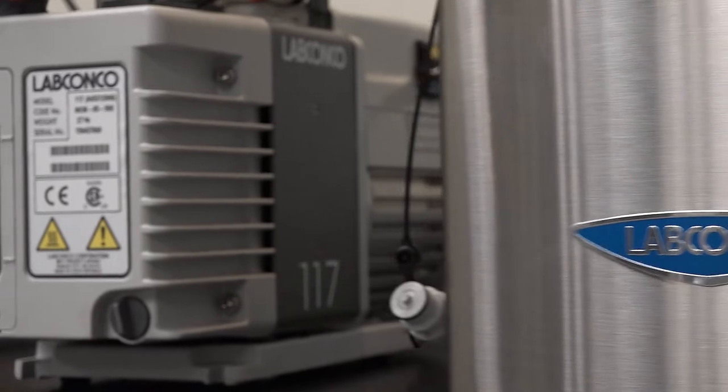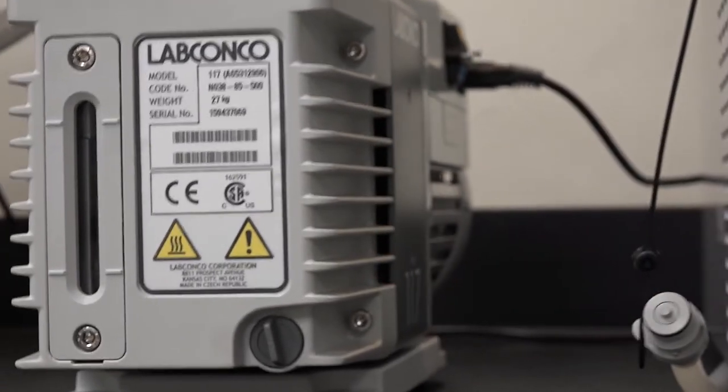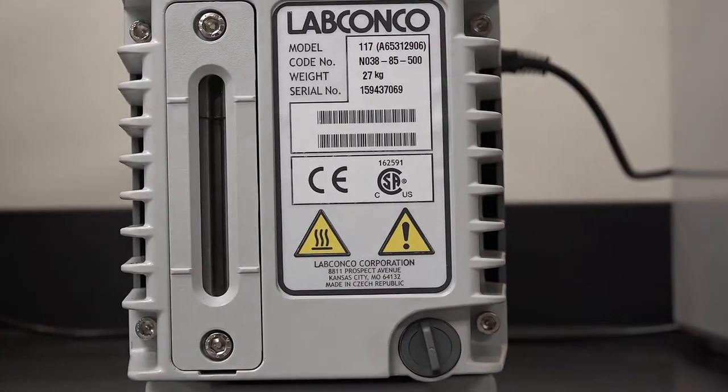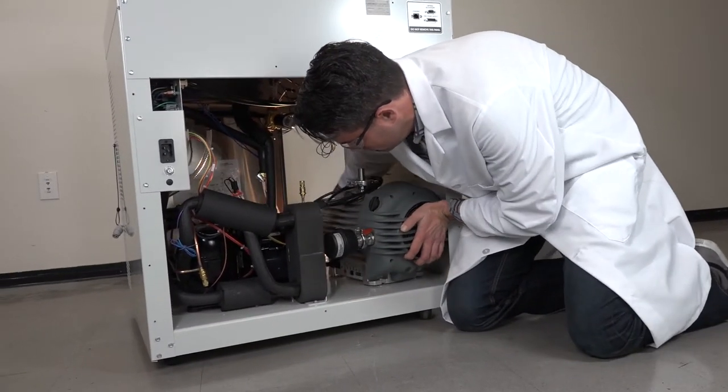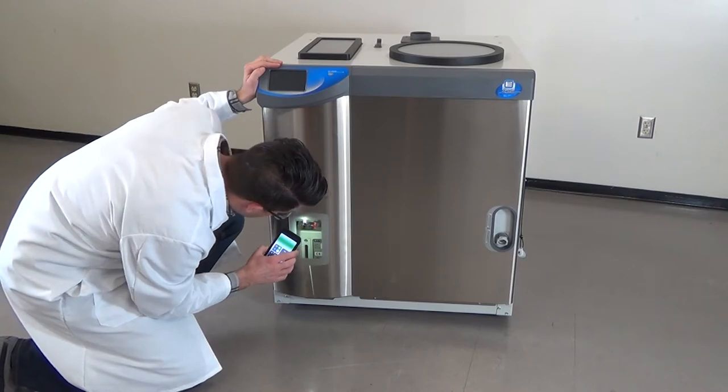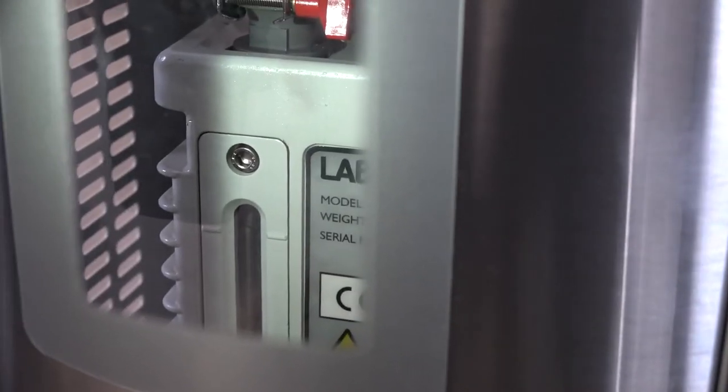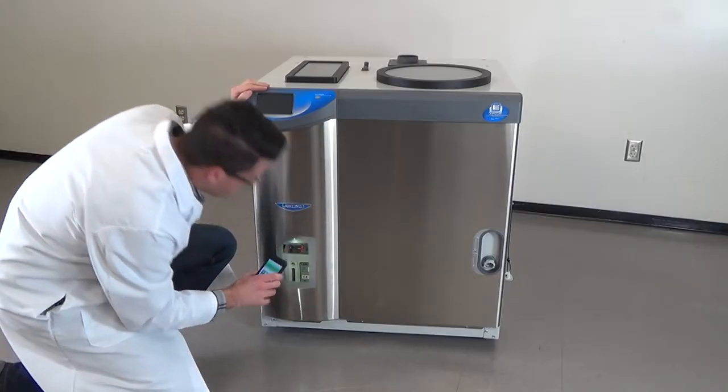Before connecting the vacuum pump, make certain the oil is at the proper level. Place the vacuum pump inside the console freeze dryer. If using a vacuum pump with oil, position the pump so that the oil sight glass can be seen from the viewing window in the front panel.